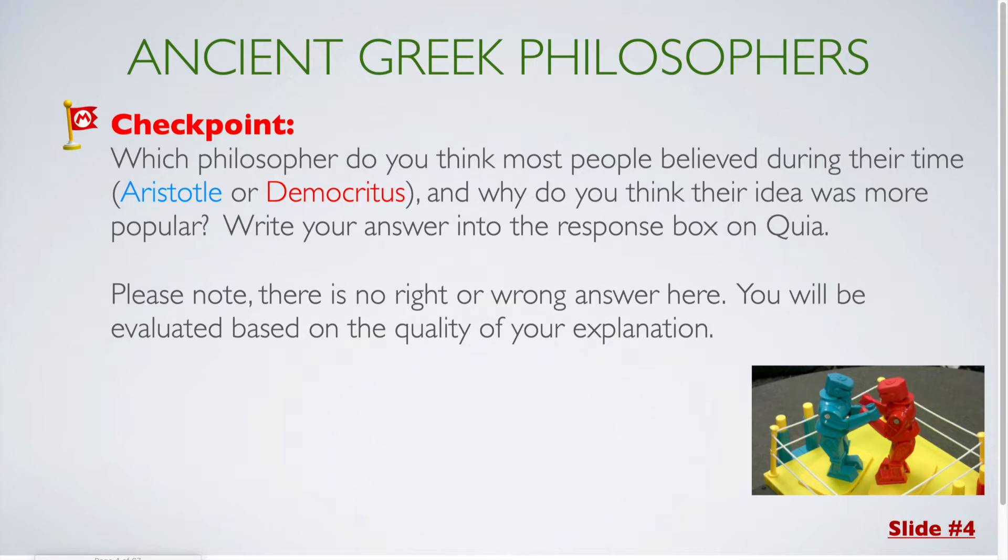For our first checkpoint question, you are going to think about which philosopher was most believed during their time, either Aristotle or Democritus. And you are going to write out why you think their idea was more popular. At this point, you should pause the video and fill in your response in Kia before moving on. And please note, there is no right or wrong answer here, so you are just filling in your explanation for why you believe one or the other was more believed.